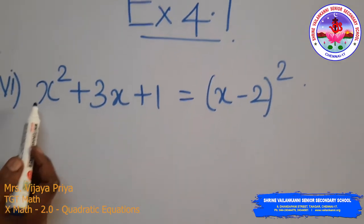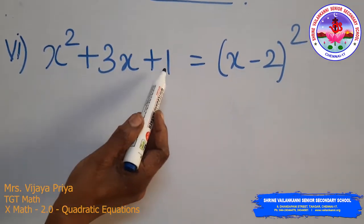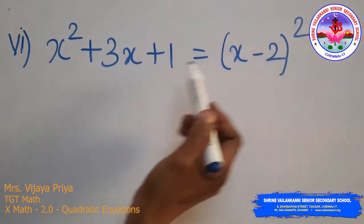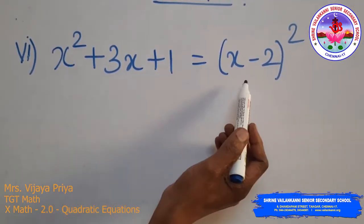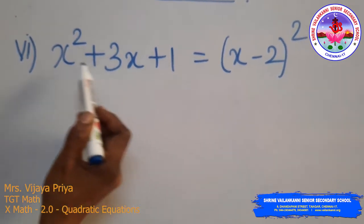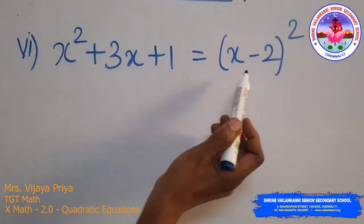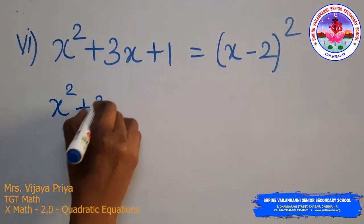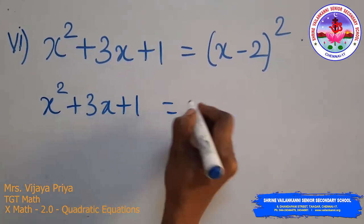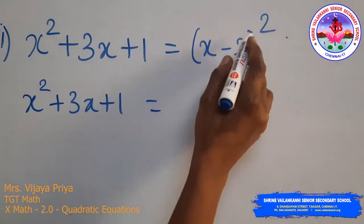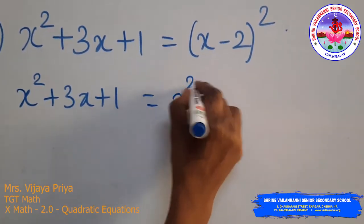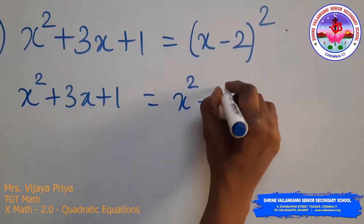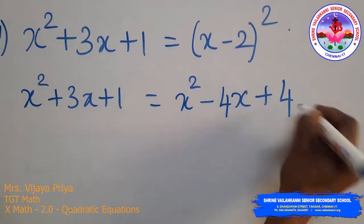Sixth subdivision: x² + 3x + 1 = (x − 2)². The left hand side is already expanded. Expanding the right hand side using the identity (a − b)² = a² − 2ab + b², we get x² − 4x + 4.